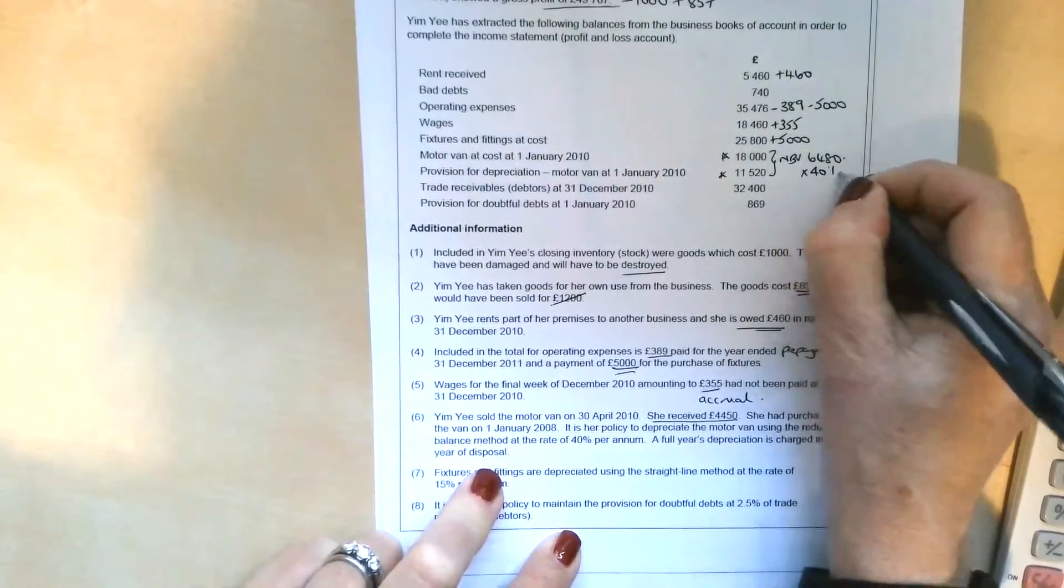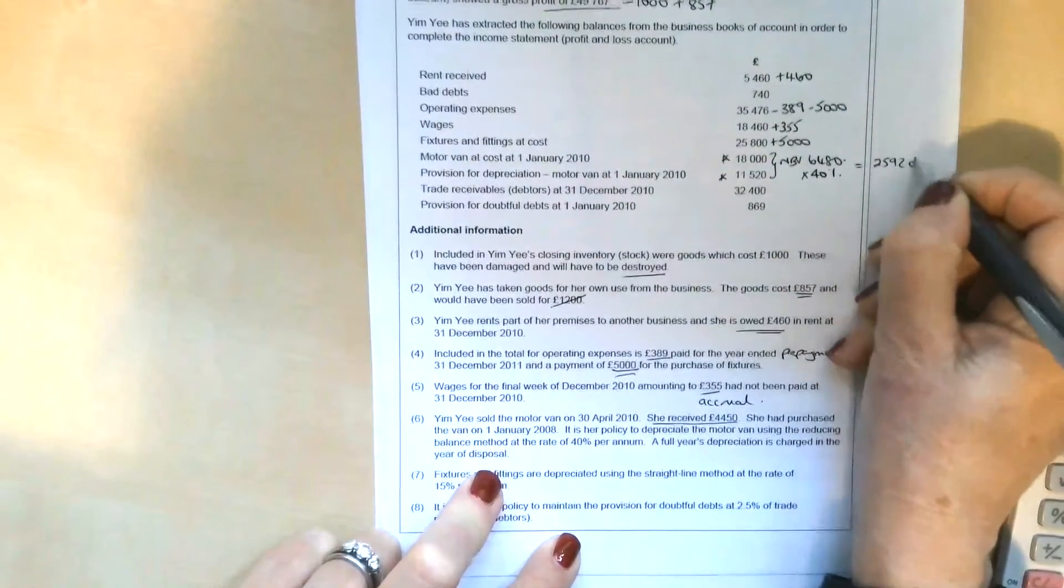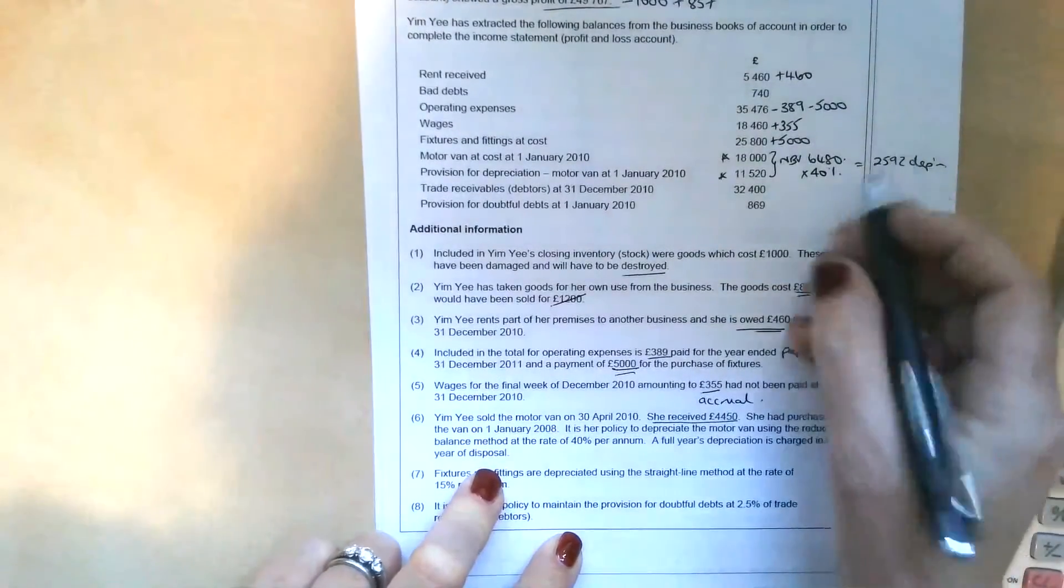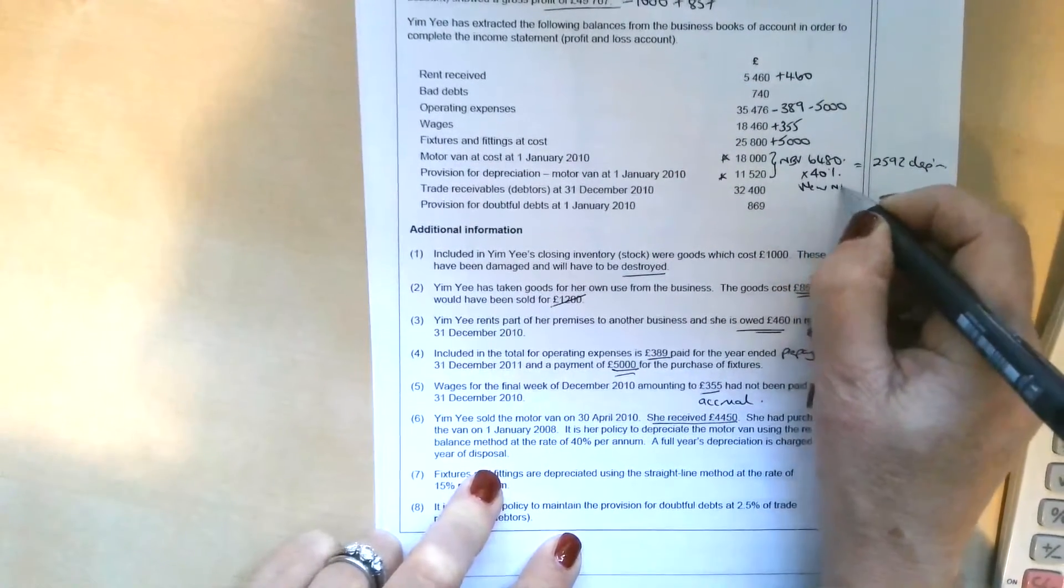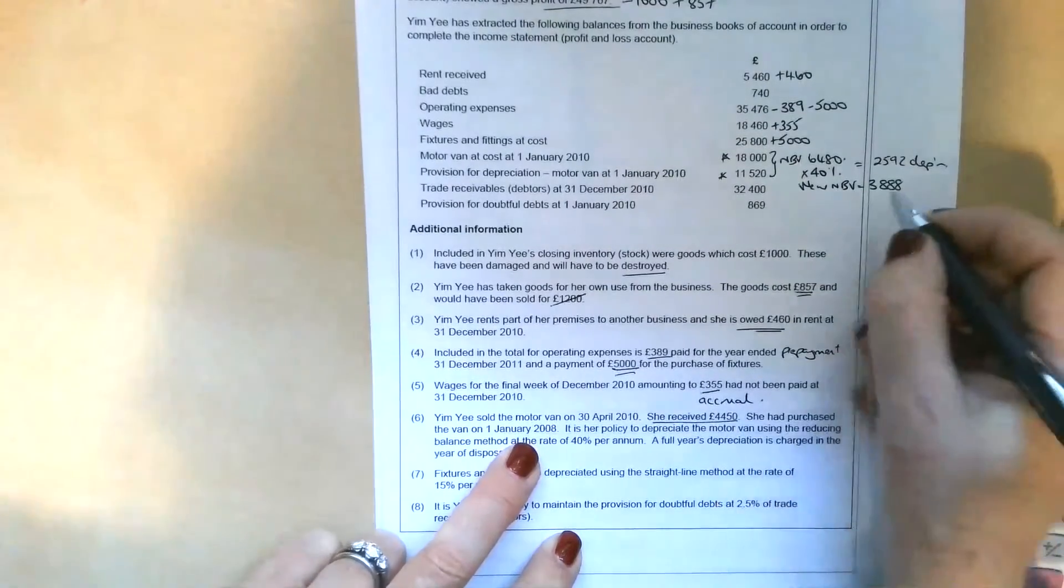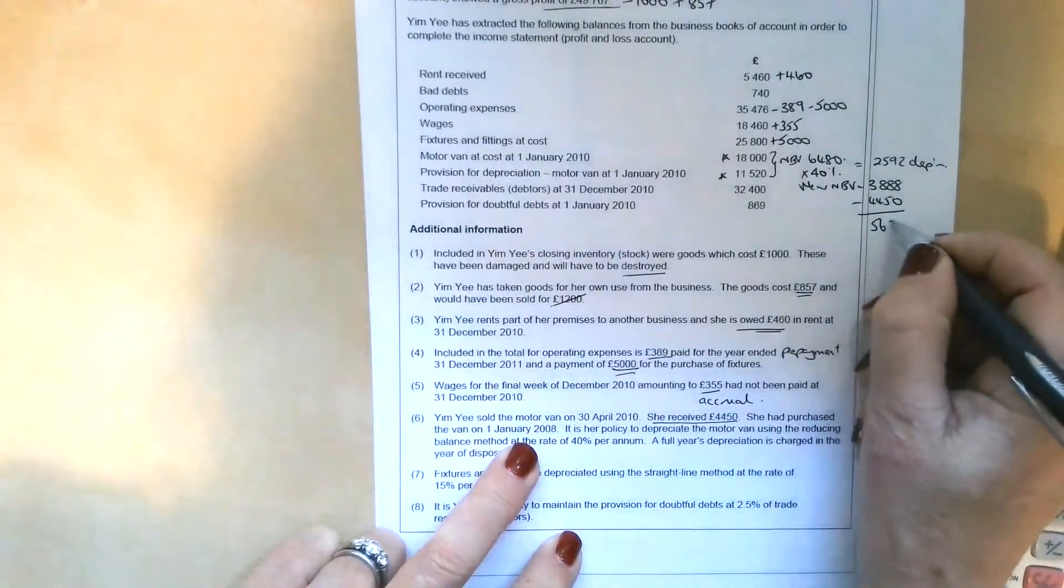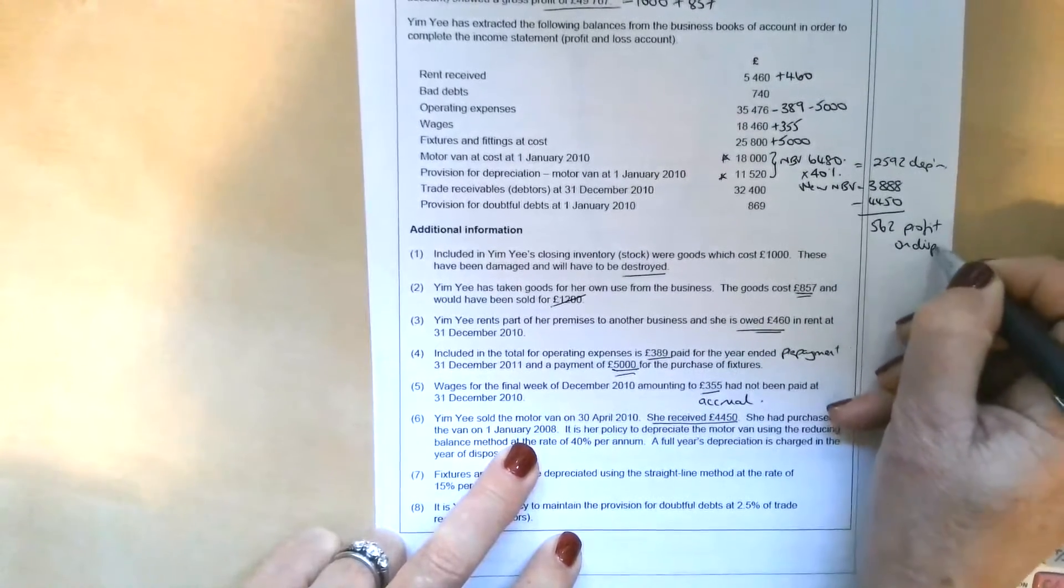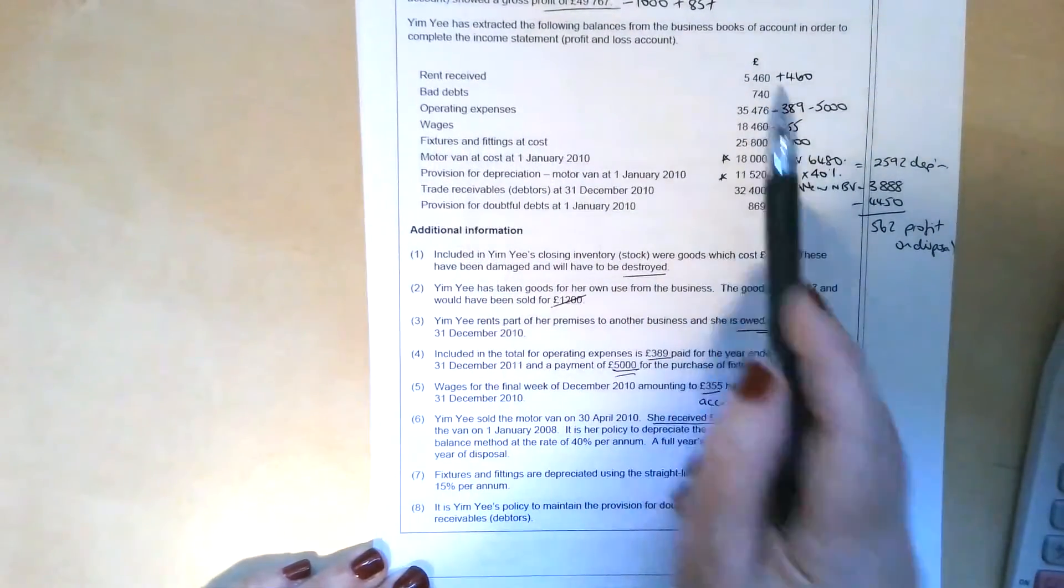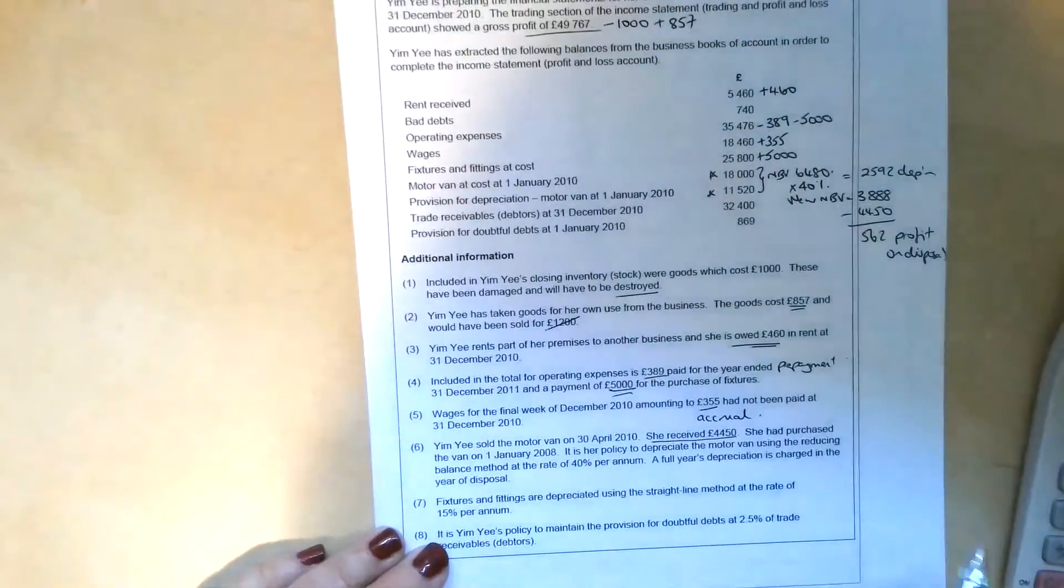It's her policy to depreciate the motor van using the reducing balance method at the rate of 40% per annum. A full year's depreciation is charged in the year of disposal. So we're going to have to do 40% depreciation on that. So £6,480 times 40% is £2,592 depreciation. We're going to need to include that as an expense on the income statement. But if we take the £6,480 and deduct the £2,592, the new net book value is going to be £3,888. Well, she sold it for £4,450, so that means she's actually made a profit on disposal of £562. That's also going to need to go into the income statement as other income.